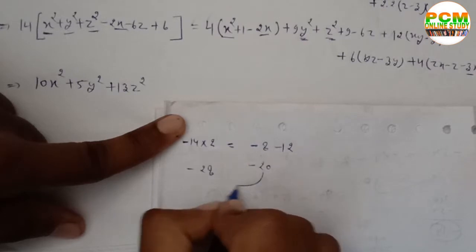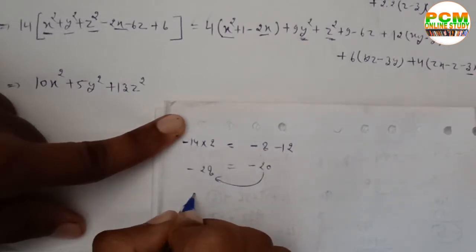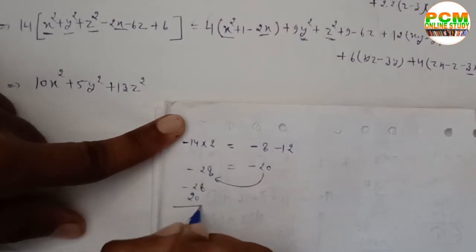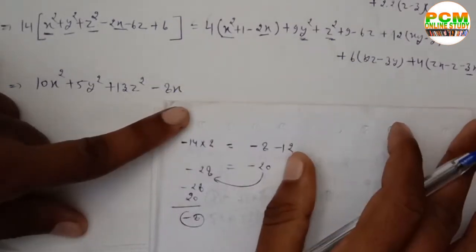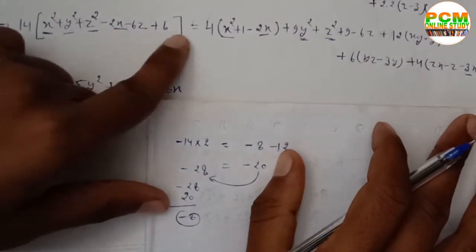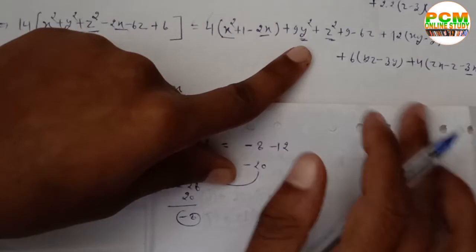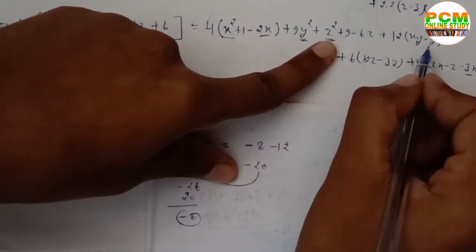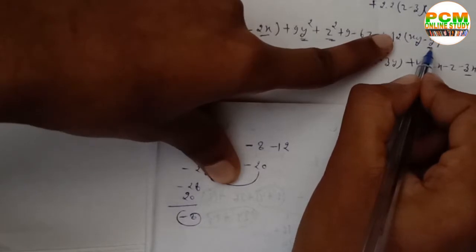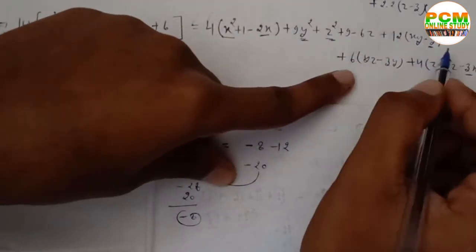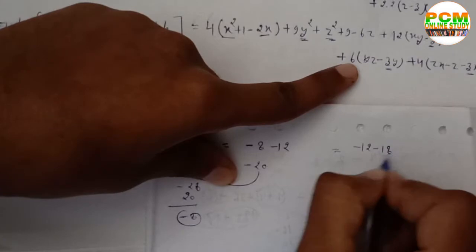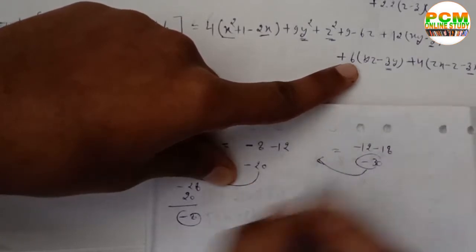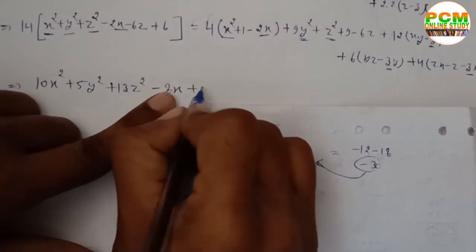Collecting the x coefficient terms: from the left side 14×(−2x) = −28x, and from expansion +20x, giving −28x+20x = −8x. Collecting y coefficient terms: the combined y terms yield −30y, sending to the other side gives +30y.